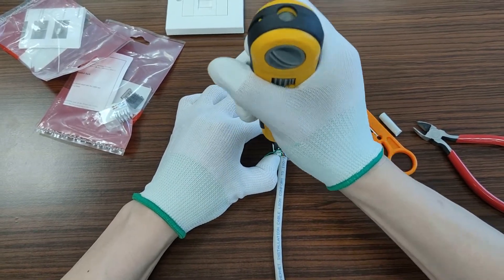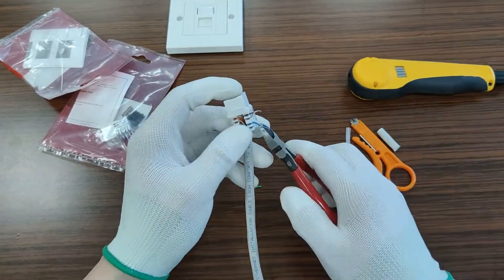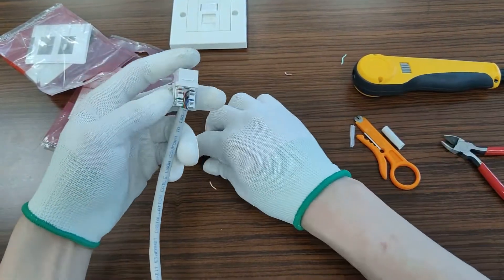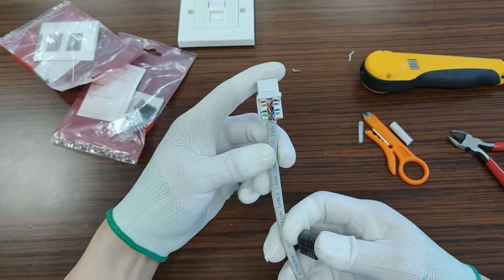The extra wires have to be cut after punching down the wire pairs. The last step is putting on the cover.